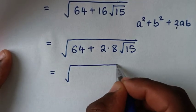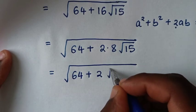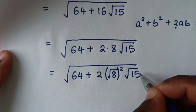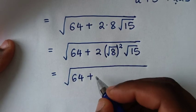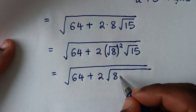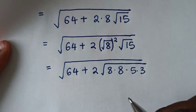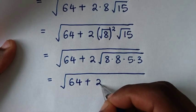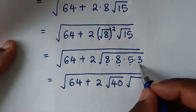Then it will be equal to square root of 64 plus 2 times — where 8 is the same as square root of 8 squared — times square root of 15. And square root of 8 squared is square root of 8 times 8, and square root of 15 is the same as square root of 5 times 3. So it will be equal to square root of 64 plus 2 times square root of 8 times 5, which is 40, times square root of 8 times 3, which is 24.